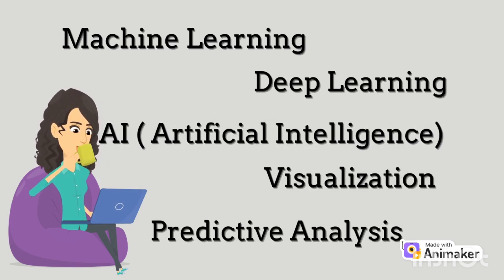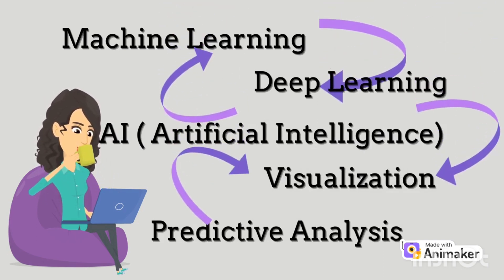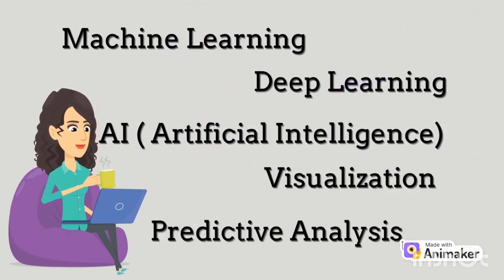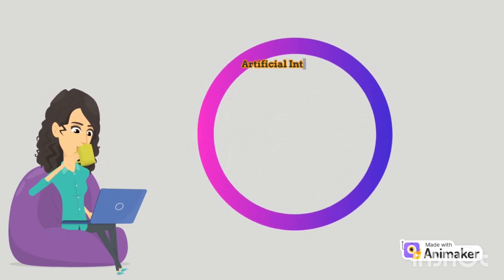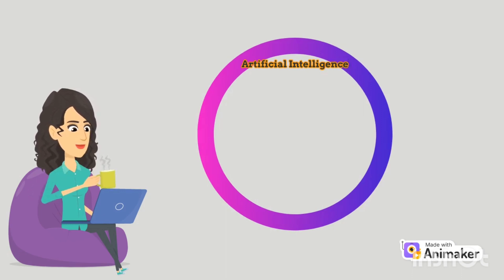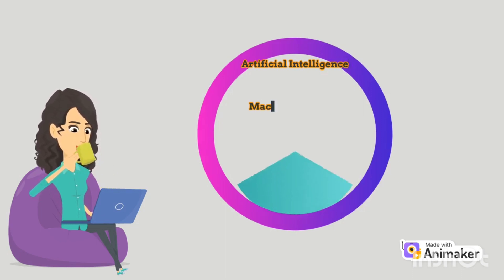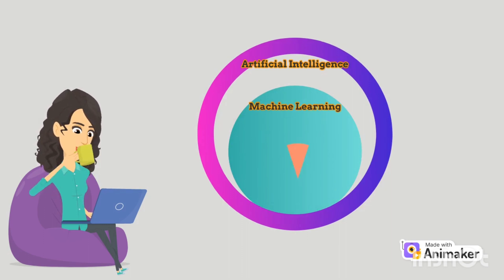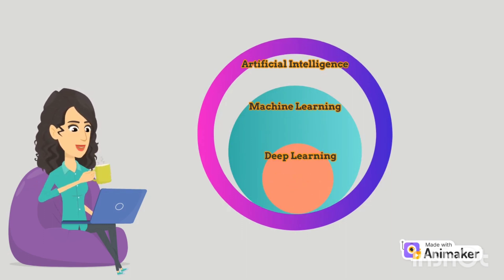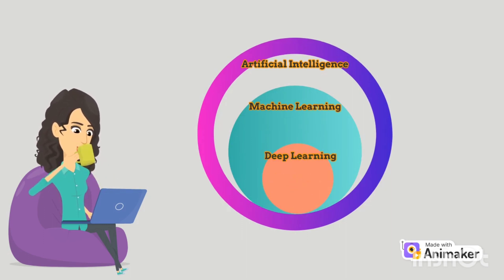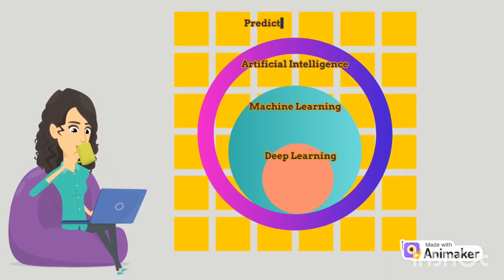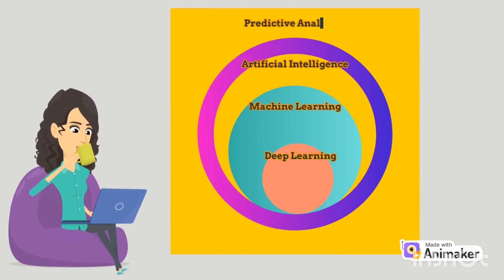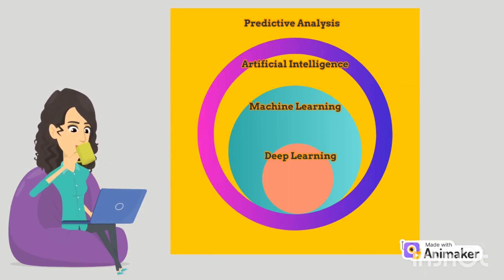Now we can differentiate between machine learning, deep learning, AI, visualization, and predictive analysis. Using a Venn diagram: AI is a superset — it enables machines to behave like humans. Machine learning is a subset of AI, and deep learning is a subset of machine learning. Predictive analysis is a kind of universe which contains multiple forecasting models and may include AI, machine learning, deep learning, and visualization.